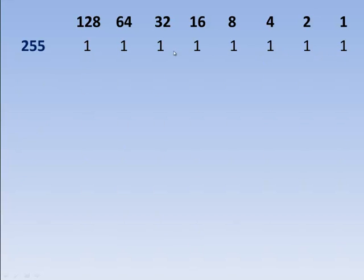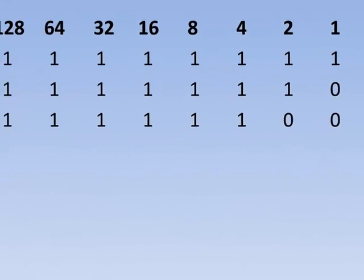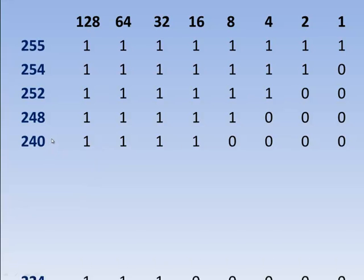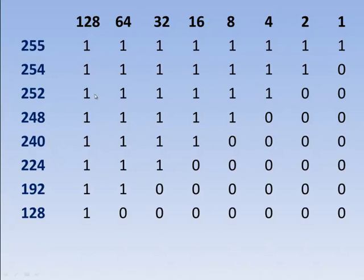As you turn bits off, your number changes. If you turned off the 1 bit, you would have 254. If you then turned off the 2 bit, you would have 252. As you continue to work your way from right to left, the number continues to decline. When you have 4 bits on and 4 bits off, it always equals 240. Three bits on and 5 off would be 224. One bit on is 128. And if they're all 0, it equals 0.